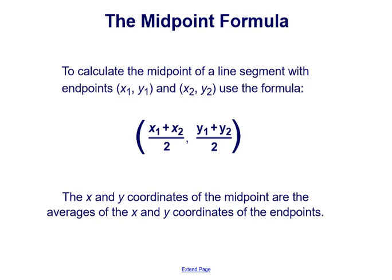This is how we can calculate any midpoint of any line segment. If it has endpoints of (x1, y1) and (x2, y2), we find the average between the x-coordinates and the average between the y-coordinates. It's x1 plus x2 divided by 2, and y1 plus y2 divided by 2 — those averages of the x and y coordinates of the endpoints.